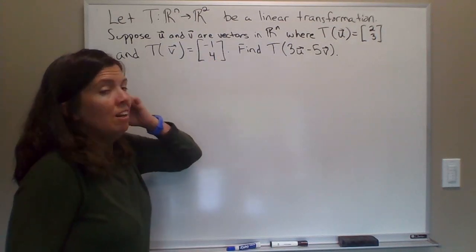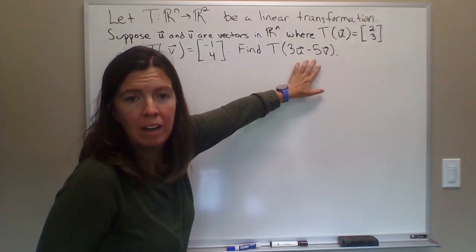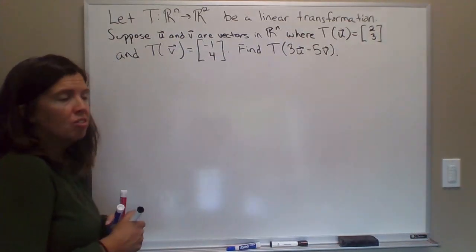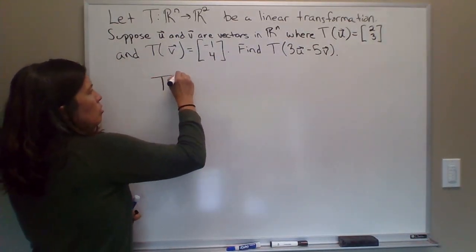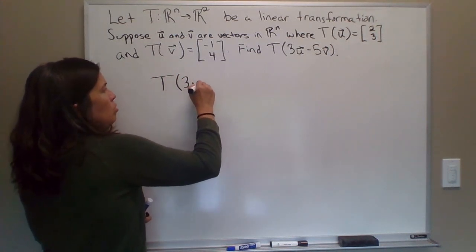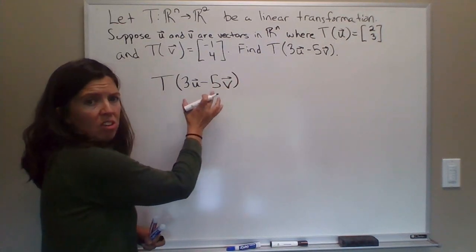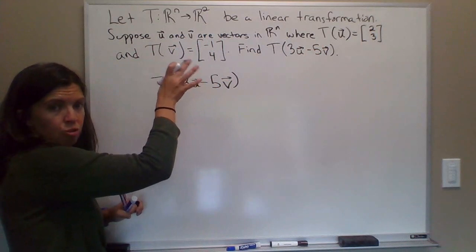We want to then find T of this vector, 3u minus 5v. And the whole idea here is to use properties of linear transformations. So T(3u - 5v), we would like to express this in terms of T(u) and T(v), because those vectors we know.